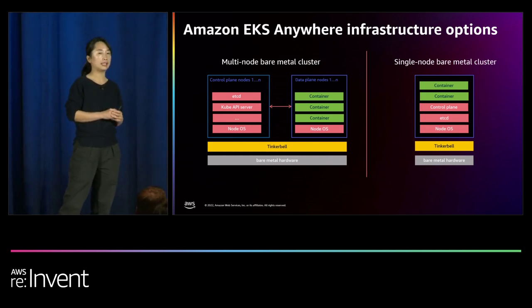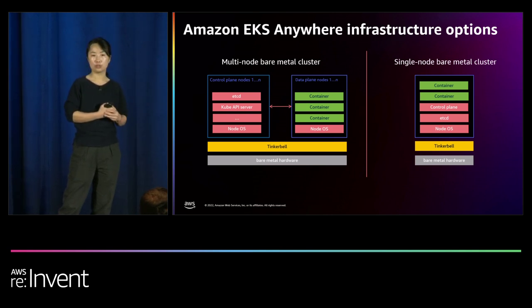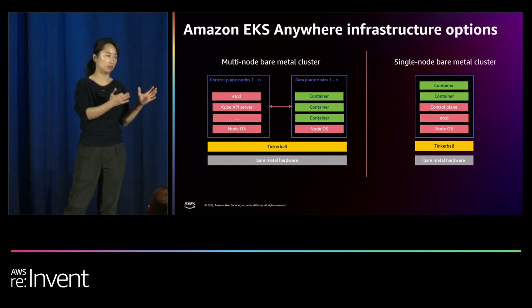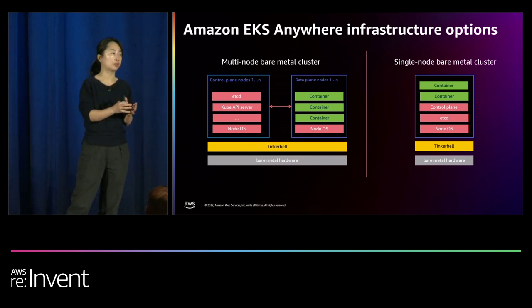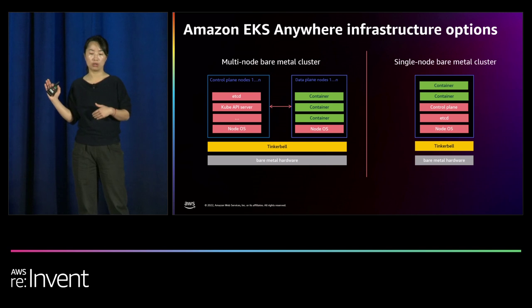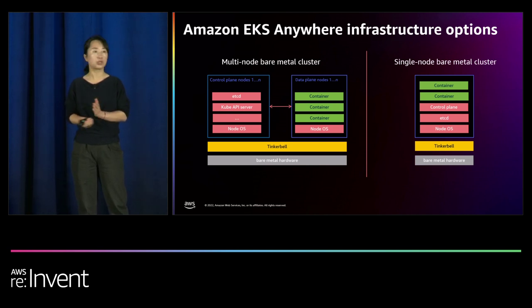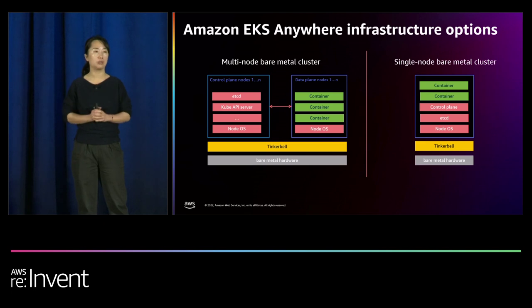From the beginning, we designed EKS Anywhere to run highly available Kubernetes clusters in your own on-premise data center on your own hardware — it's a multi-node cluster deployment. But we've heard from customers, especially in the telecommunications space for RAN (radio access network) use cases, that they need a small-footprint cluster, as small as putting everything into one single physical server. So this month we're releasing support for a single-node bare-metal cluster deployment option, putting the control plane, data plane, etcd — all components — onto a single physical machine. Note that this option is still meant for compute-intensive workloads, so you'll need about 32 vCPUs of compute capacity for this single-node machine.